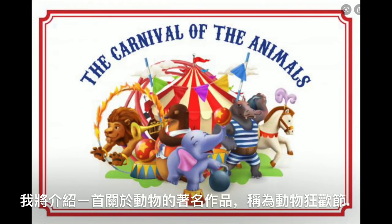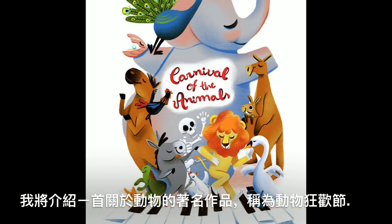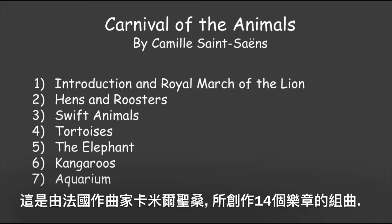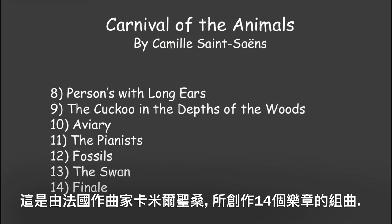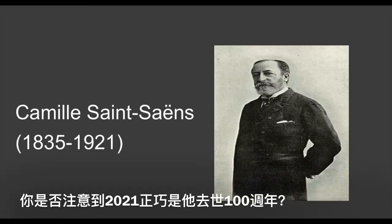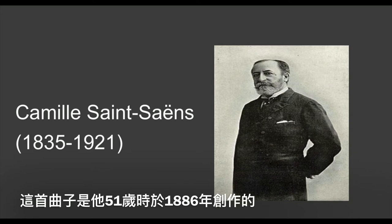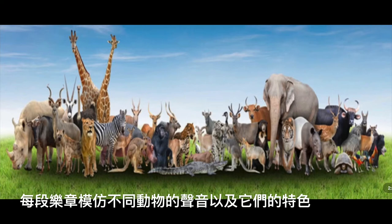Ms. Lu will introduce a famous piece about animals, which is called The Carnival of the Animals. It is a musical suite of 14 movements by the French composer Camille Saint-Saëns. Do you realize 2021 is exactly 100 years after he passed away? This piece was composed in 1886 while he was 51 years old. Each movement imitated the sounds and characters of different animals.